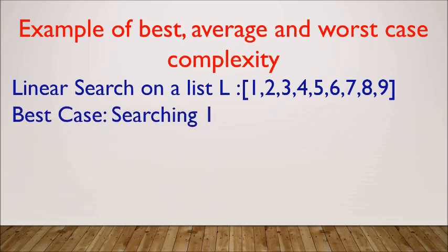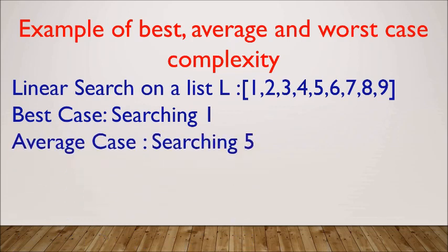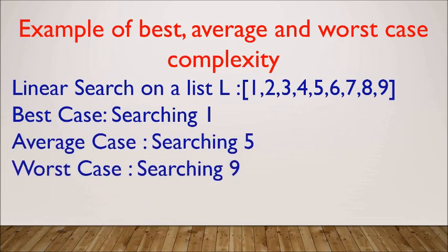In this linear search example, best case will be finding 1 (or 9 if using a reverse loop). Average case will be finding 5. Worst case will be finding 9 if using a forward loop, and if using a reverse loop, the worst case will be finding 1.